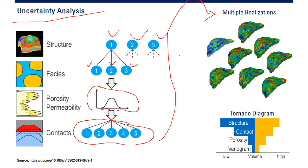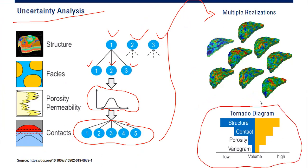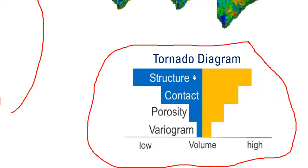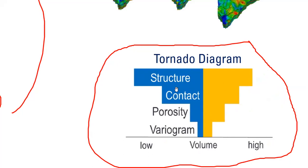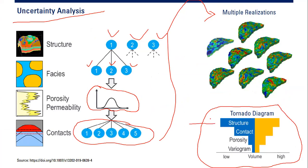In the software we create multiple realizations. The reservoir can look like this, or like this, or like this — we are not sure. We can have hundreds or thousands of scenarios in our simulation using software. We then perform uncertainty analysis using a tornado diagram, which shows that structural scenario gives the highest range, followed by contact, then porosity.